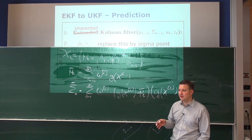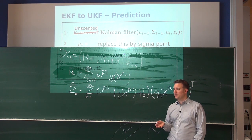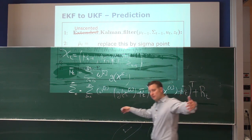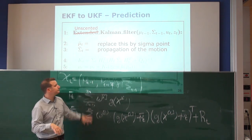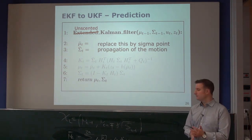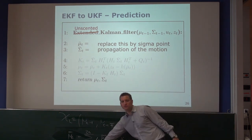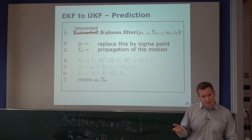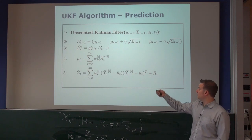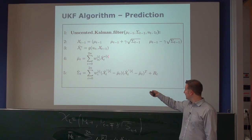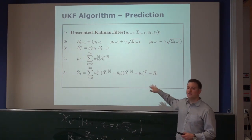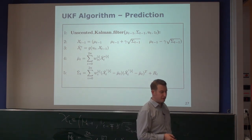In the prediction step, we increase our uncertainty by adding the motion noise R_t, because we propagate the covariance and expand it with this noise term. The sigma points span from i=0 to 2n, giving 2n+1 points total. In implementation, you precompute the transformed sigma points once and reuse them rather than evaluating the transformation three times. That's exactly the prediction step of the unscented Kalman filter.